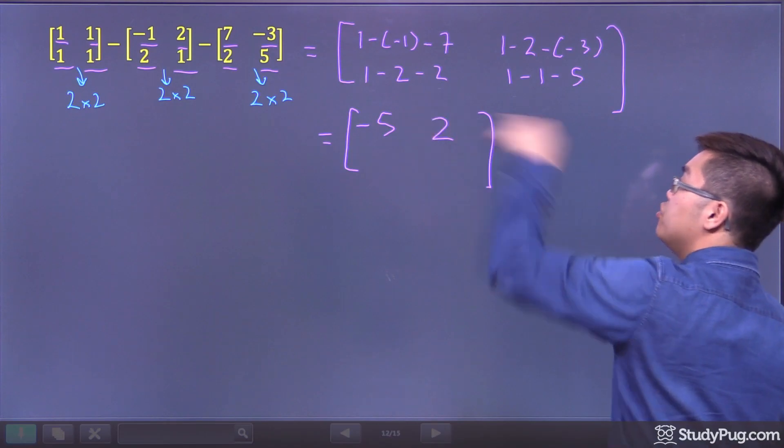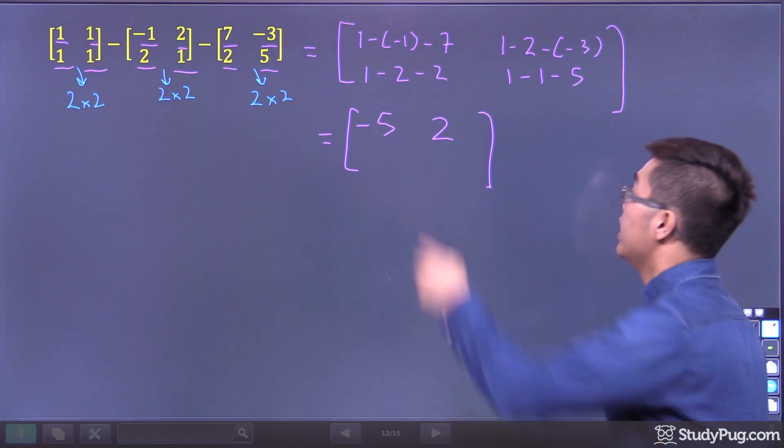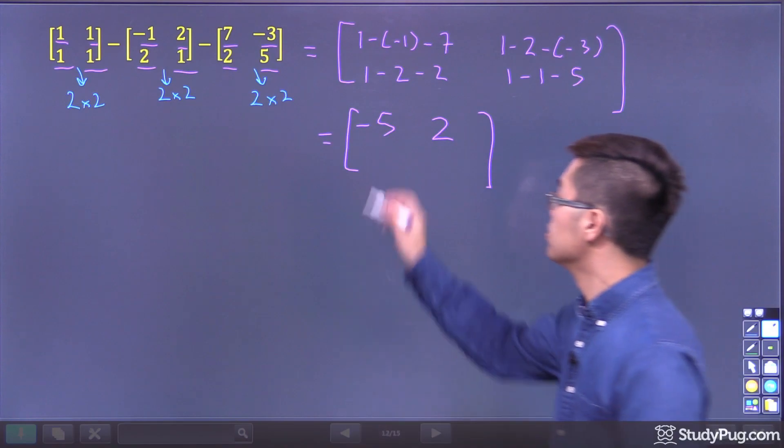Here we've got 1 minus 2 minus 2. 1 minus 2 is negative 1. Negative 1 minus 2, that's negative 3.